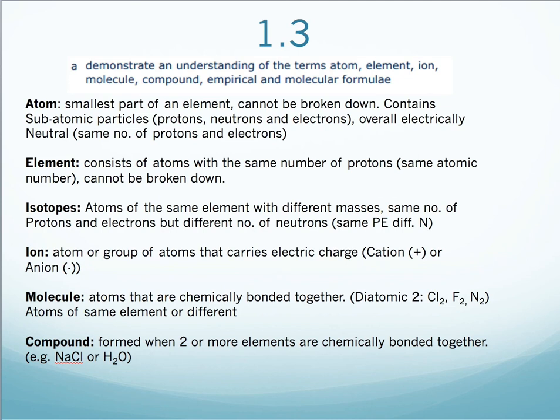Isotopes, we've just discussed, are atoms of the same element, but with different masses. They have the same number of protons and electrons, but a different number of neutrons. An ion is an atom or a group of atoms that carries an electric charge. A cation is a positive ion. An anion is a negative ion.